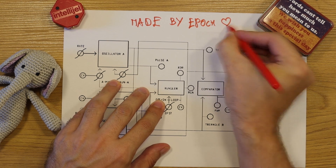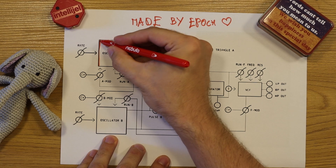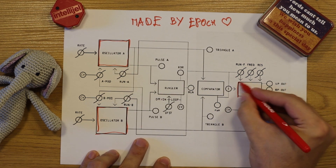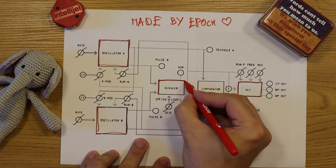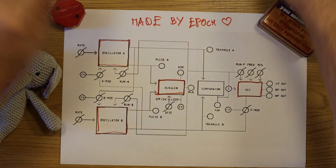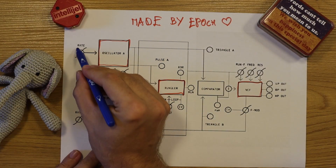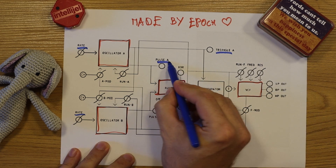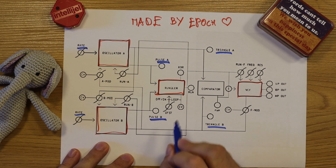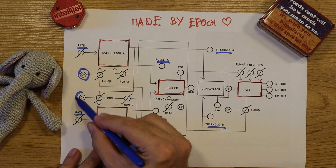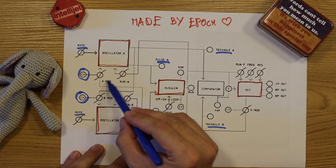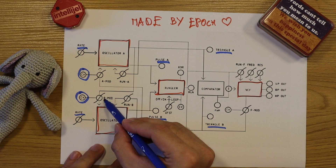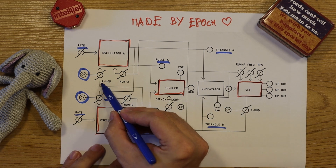Benjolin consists of four function blocks: two voltage-controlled oscillators, a state variable filter, and an unusual block invented by Hordyke called the Wrangler. The oscillators have manual frequency control, triangle and pulse outputs. They also have CV input with attenuator. Without CV inputs, these knobs control the level of internal modulation via their normalized inputs — triangle A to mod B, and triangle B to mod A.